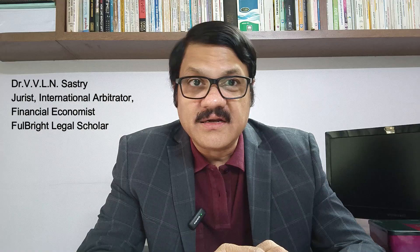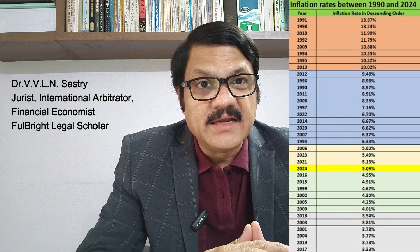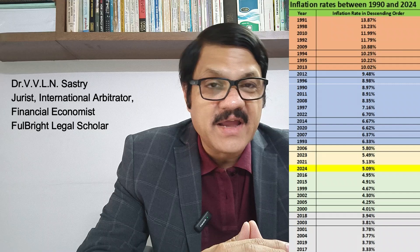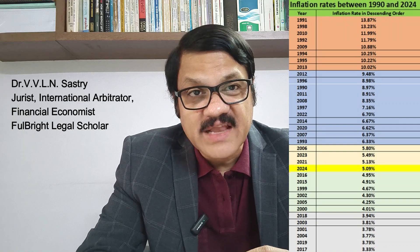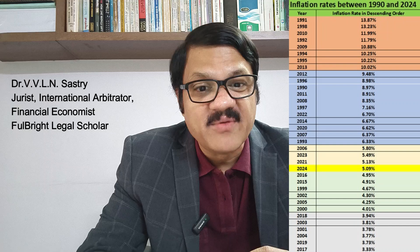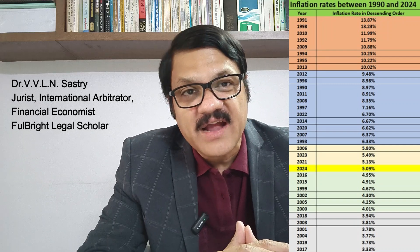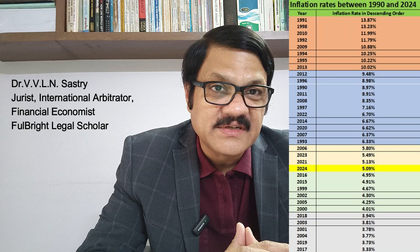In 1991, inflation had a peak rate of around 13.87%, followed by 1998 at 13.23%, and 2010 at 11.99%. In 1992, the inflation was around 11.79%, in 2009 it was around 10.88%, in 1994 it was 10.25%, in 1995 it was 10.02%, and in 2013 it was also 10.02%.